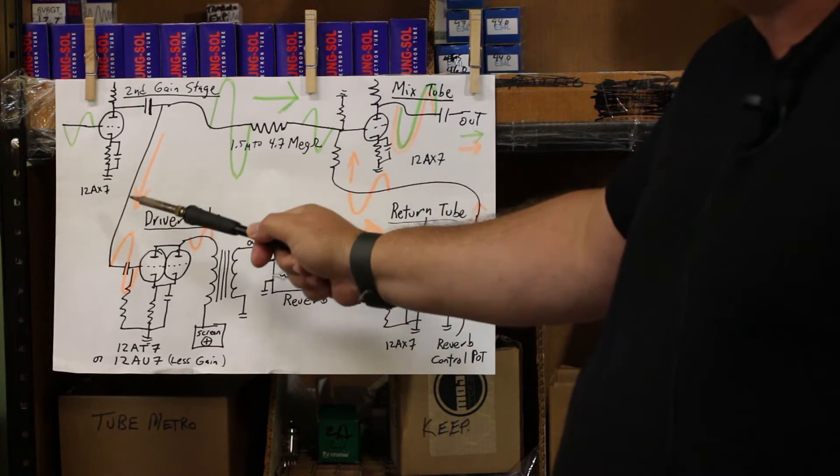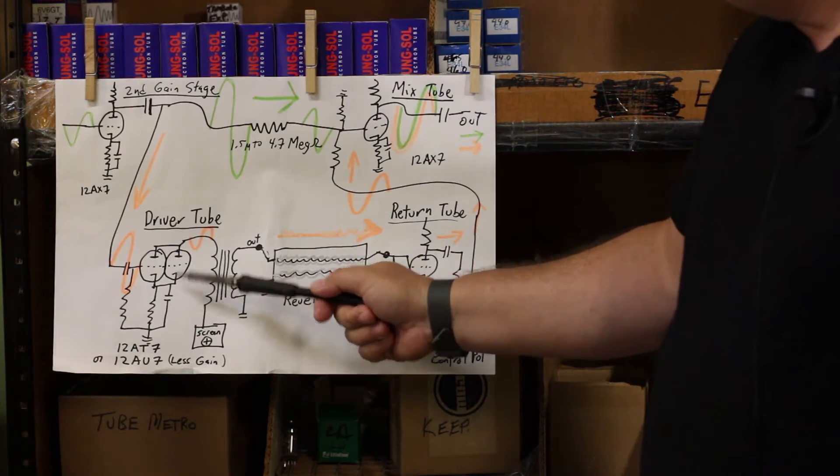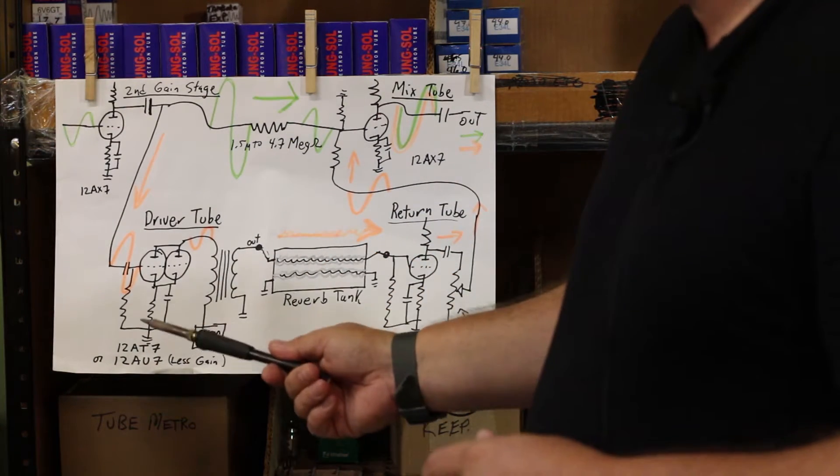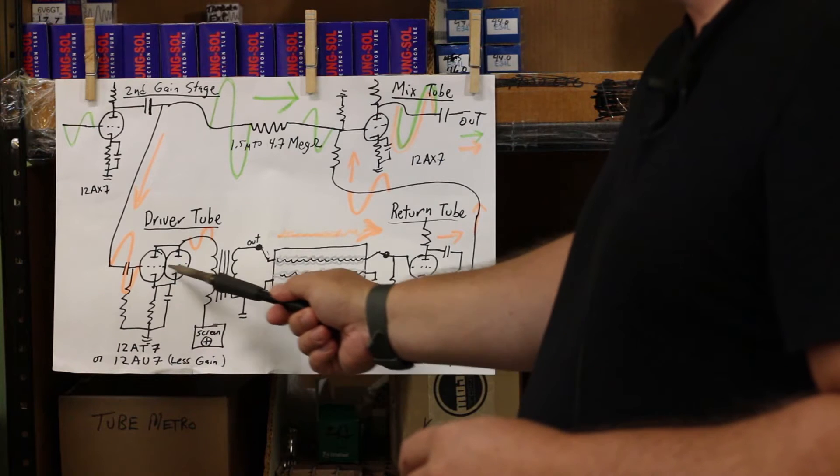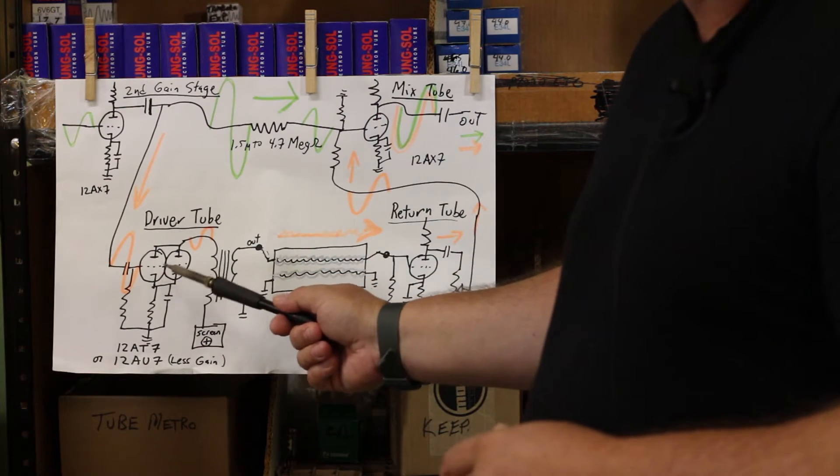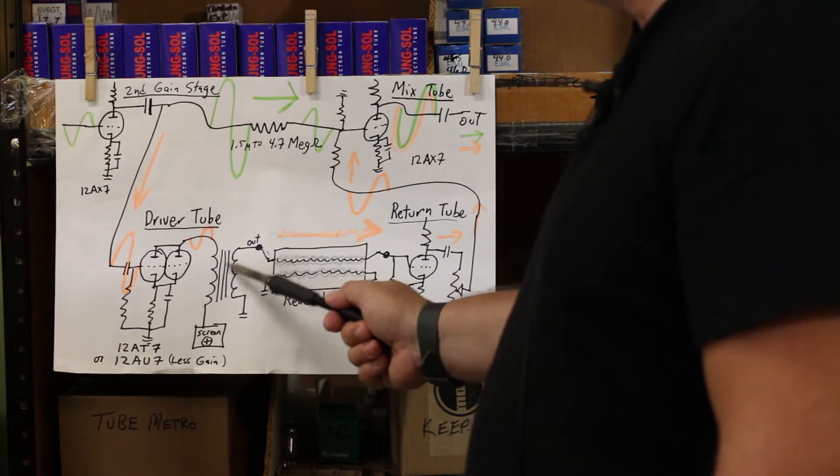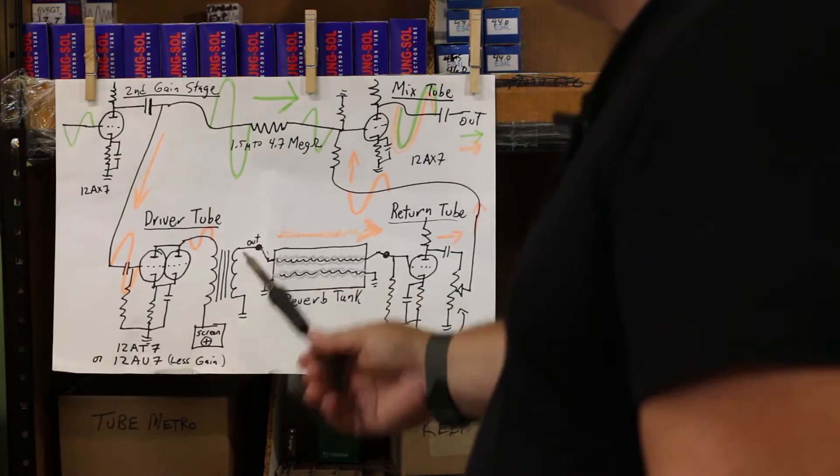Some of that signal comes down and goes to the tube, the reverb driver, which Fender-wise is a 12AT7 using both sides of it. This is like a little power amp, and it can make two watts. It goes through that transformer we looked at.